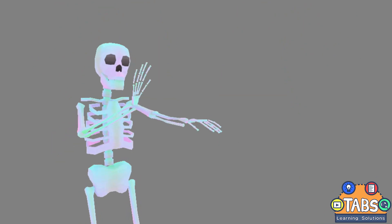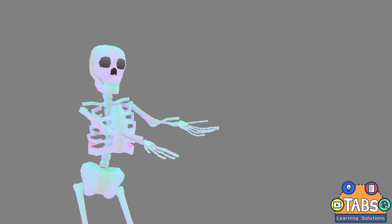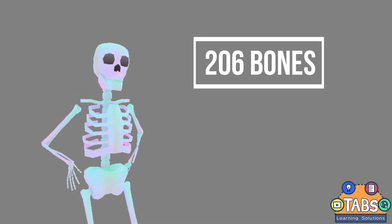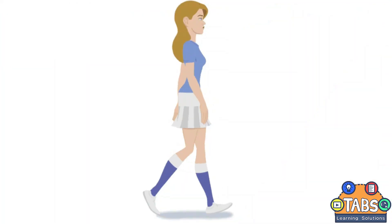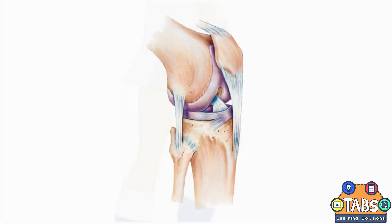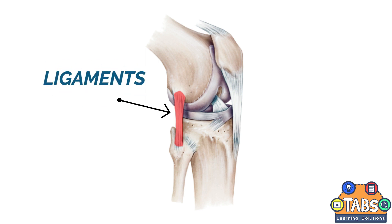The adult human skeleton usually consists of 206 bones that are bound together by tough and relatively inelastic connective tissues called ligaments. Ligaments are strong, dense, flexible bands that join bones to one another.